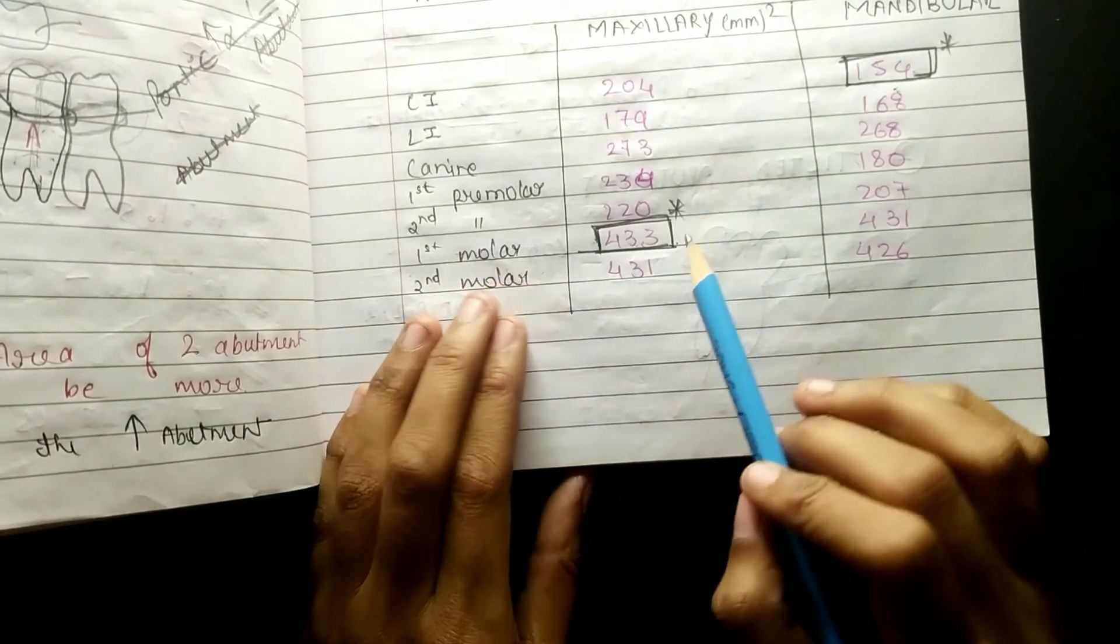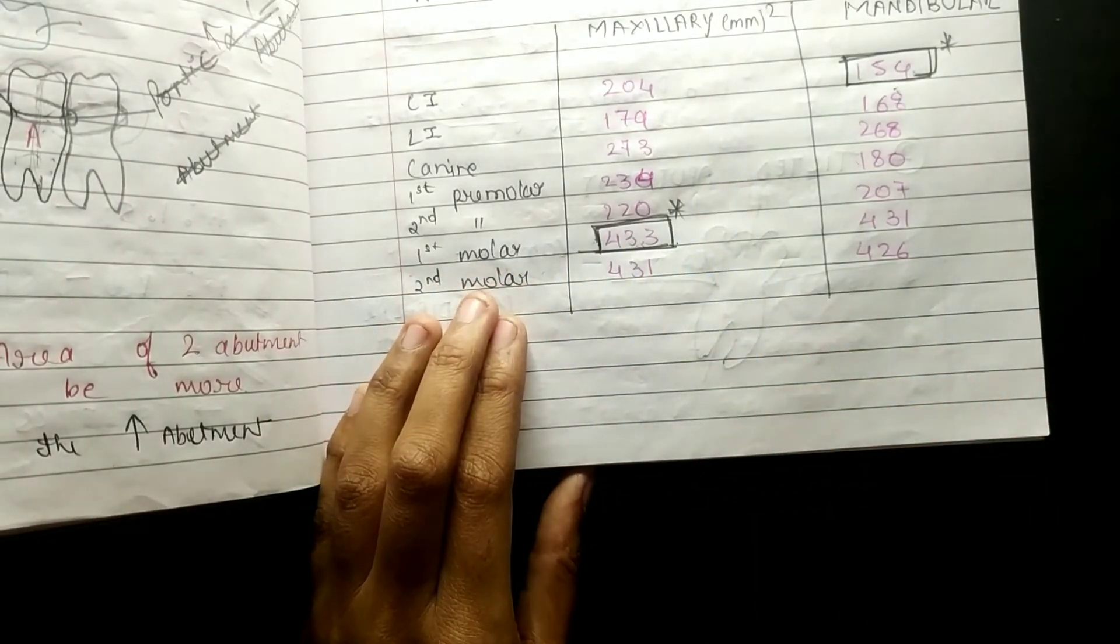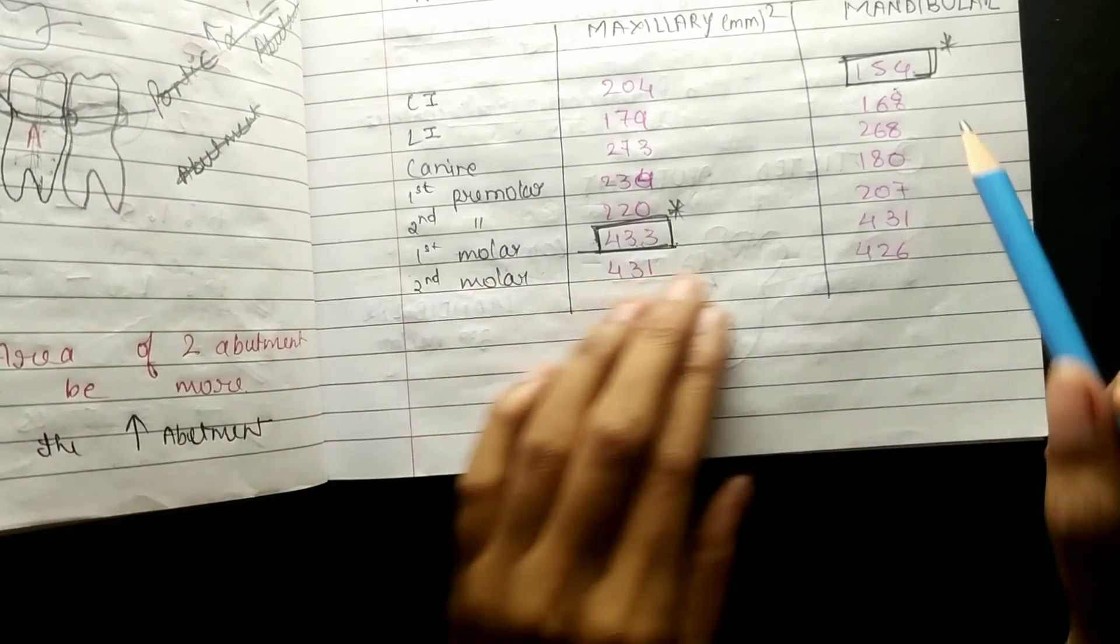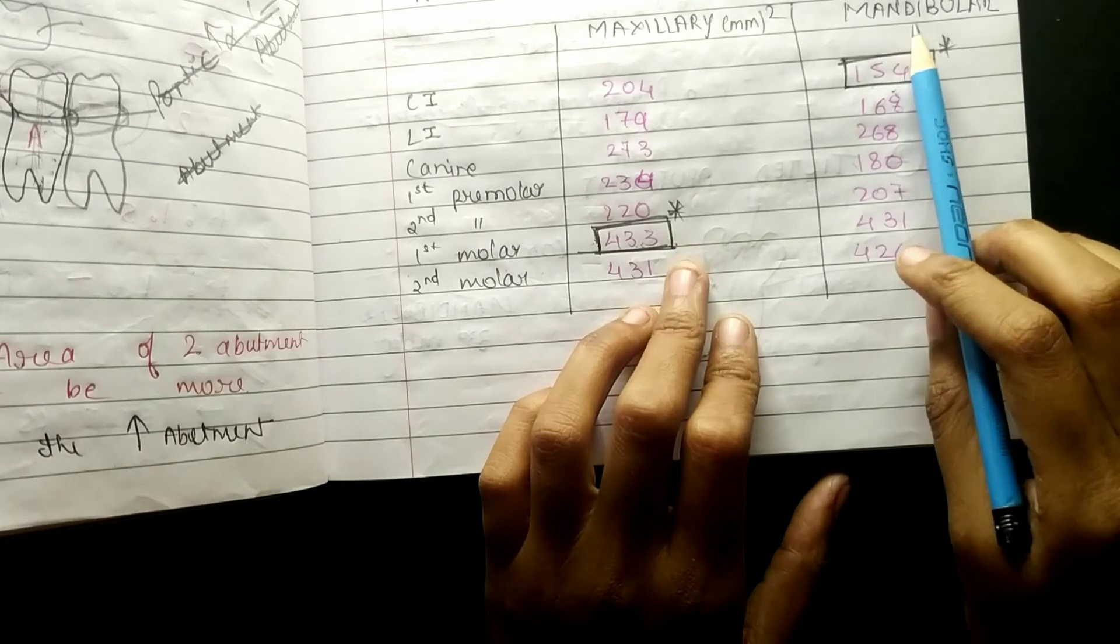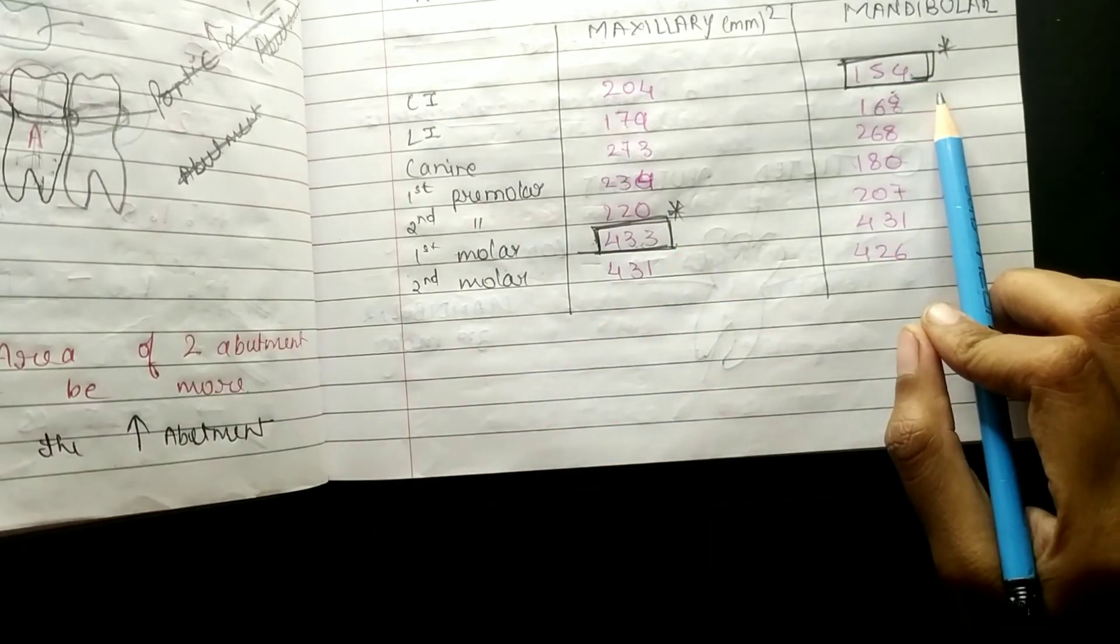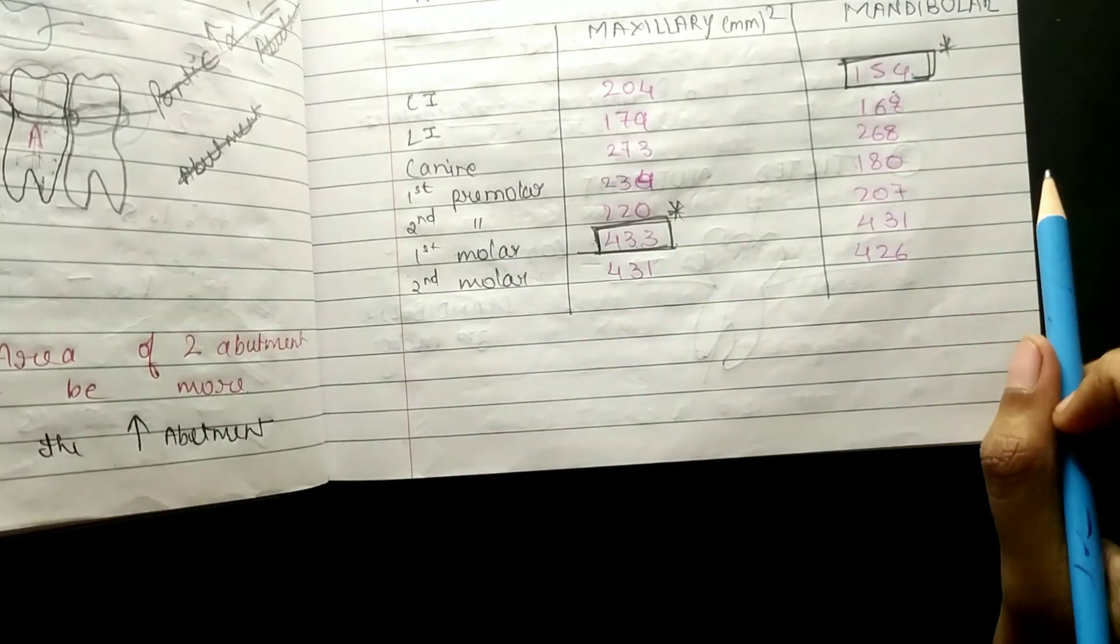First molar, maxillary first molar, has the root surface area that is 433 mm square, and mandibular central incisor is 154. So you have to remember this.